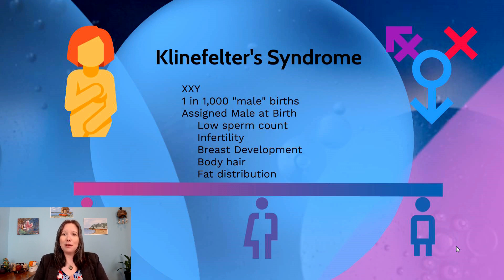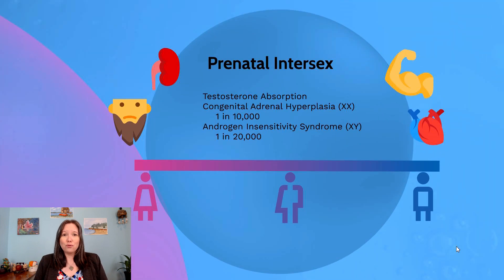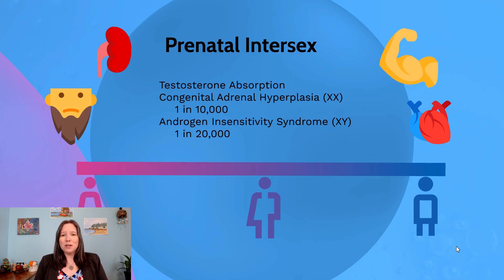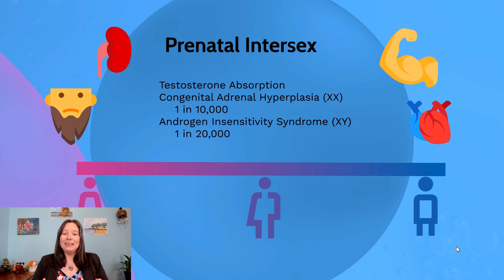It's important to understand that some people with Klinefelter syndrome identify as males, some as intersex, and some as females. Aside from those two chromosomal conditions, we also want to talk about prenatal and hormonal conditions associated with intersex. Most of these tend to involve the absorption and release of androgens, specifically testosterone.